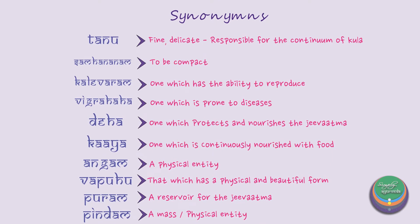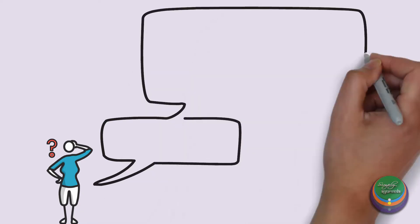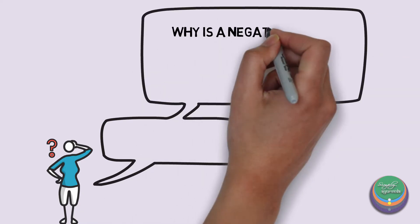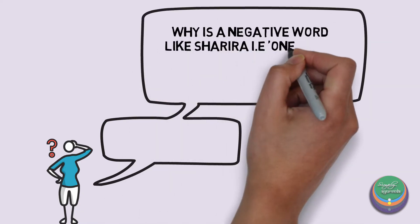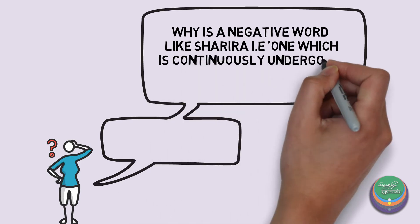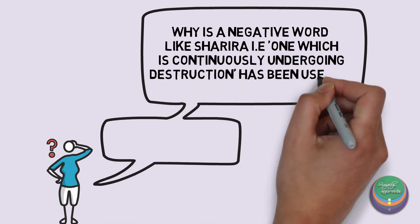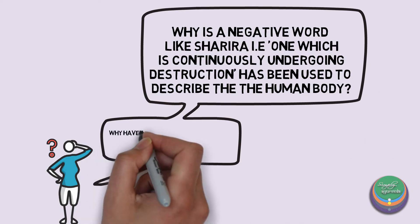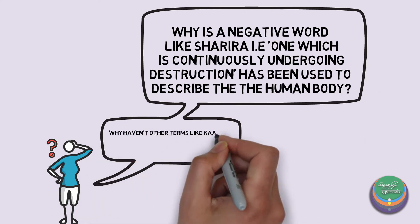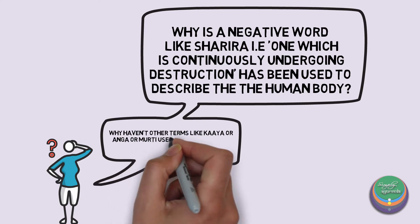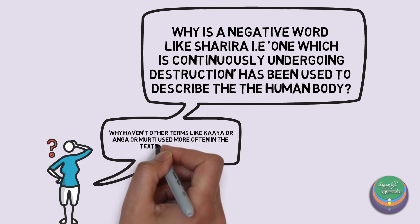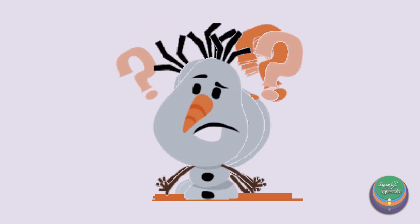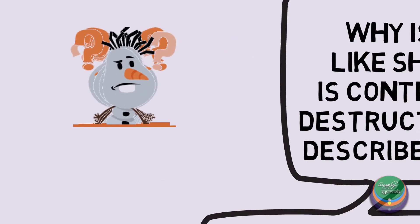The word Sharira has been famous throughout all texts of Ayurveda. A natural question arises: why such a negative connotation — that is, one which is continuously destructing — has been used to describe the human body. Why haven't other terms which represent the physical body, like Kaya, Anga, or Murthi, been used more often in the texts of Ayurveda? Tell us your thoughts by commenting on this video.